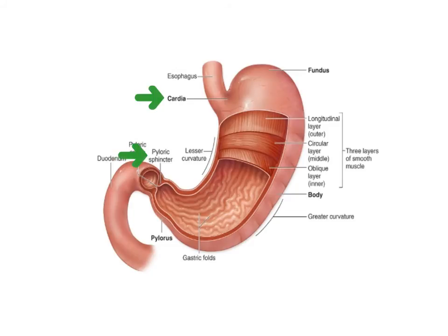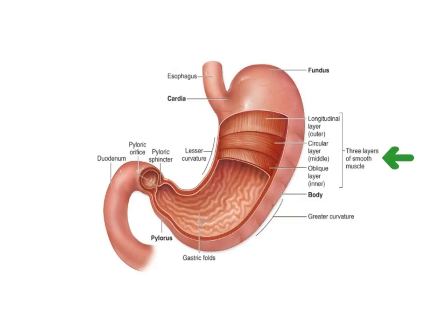To summarize, the stomach has sphincter muscles at each end that control the amount of food entering and leaving the stomach. The stomach also contains gastric glands that secrete hydrochloric acid, pepsinogen, and mucus, and has a muscular wall, all of which assist in the digestive process.